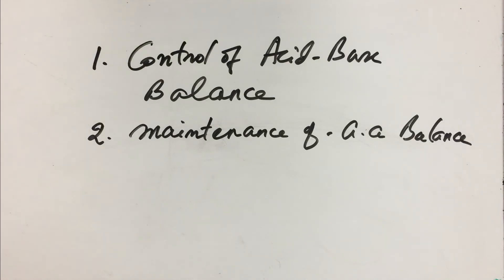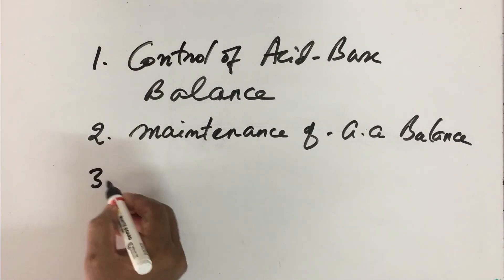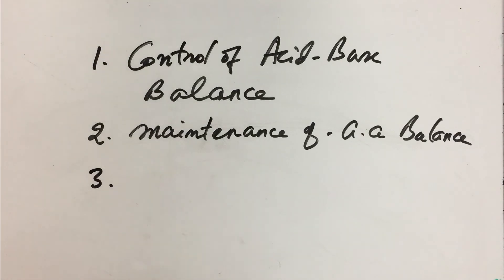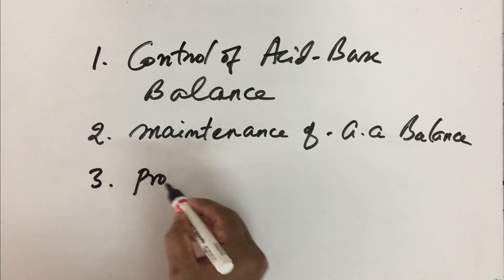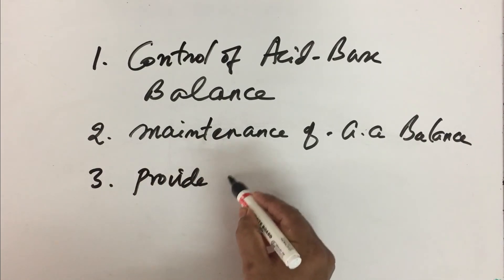Maintenance of amino acid balance is one of the metabolic roles of gluconeogenesis. The third important role of gluconeogenesis is to provide several biosynthetic precursors.